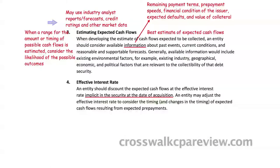The estimate of expected future cash flows should be your best estimate based on past events, current conditions, and reasonable and supportable forecasts. You should consider all available information relevant to the collectability of the security when developing the estimate of cash flows expected to be collected. You should use industry analyst reports and forecasts, credit ratings, and other market data that are relevant to the collectability of the security. Use all available information to estimate cash flows, and this should be your best estimate.